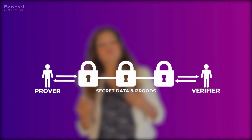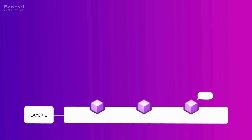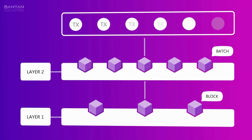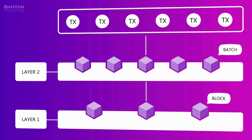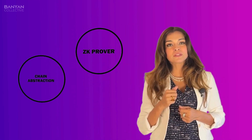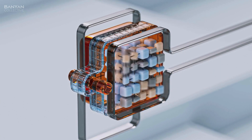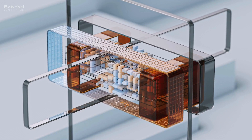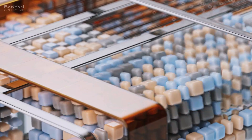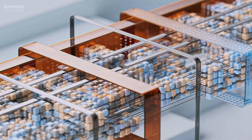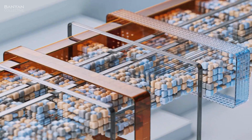The introduction of zero knowledge — ZK — brings a new approach to security. A computer can verify compliance with certain rules and conditions without actually needing to access the underlying data or details of that transaction. ZK provers play a big role in chain abstraction. Zero knowledge proofs are like a security tool that lets different blockchains talk to each other safely. Think of them as a kind of universal language that all blockchains can understand, making it easy for them to work together and check each other's transactions without needing to know all the technical details. This makes transactions across different blockchains much safer.